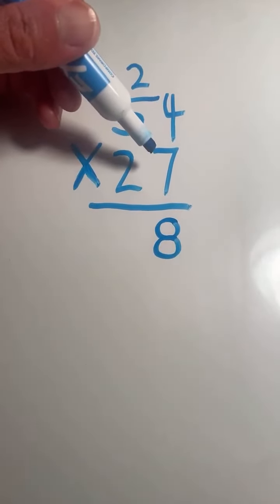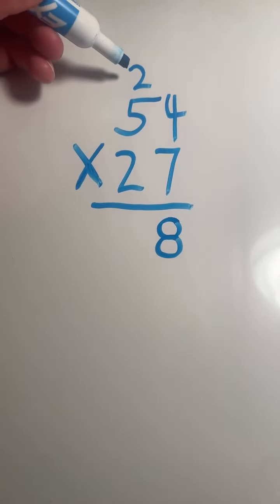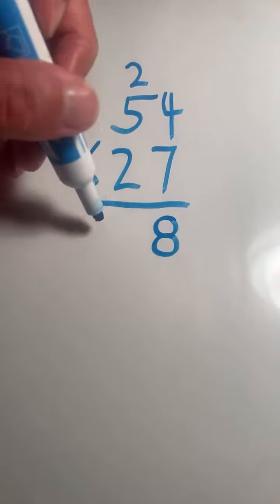5 times 7 equals 35. We have to add the 2 that we carried over. 35 plus 2 equals 37.